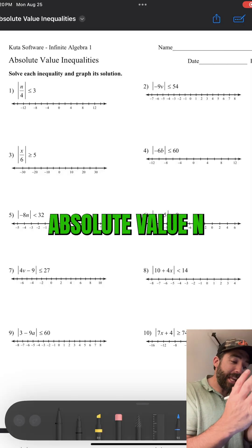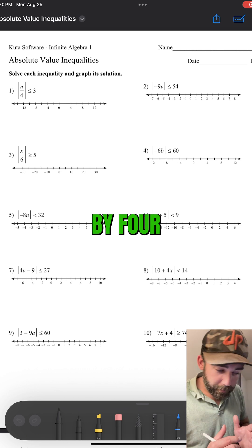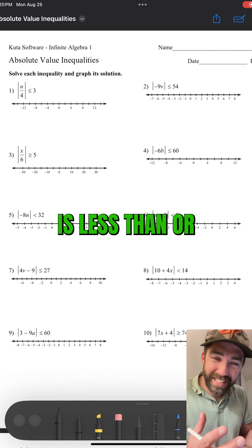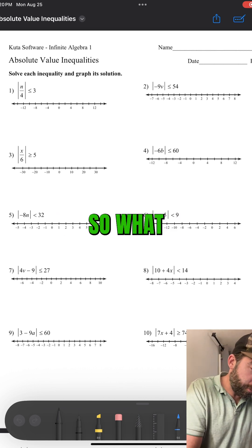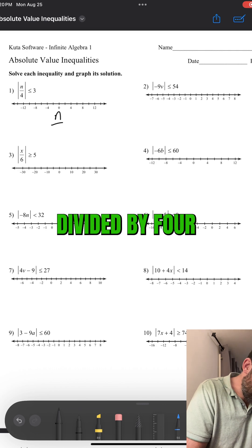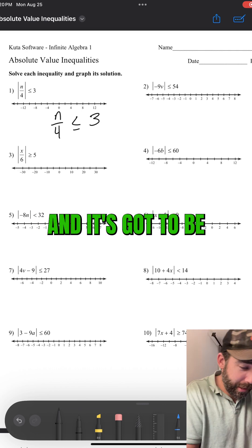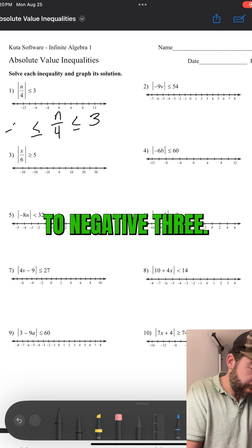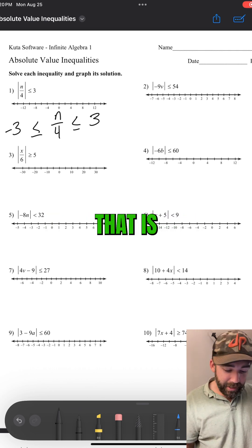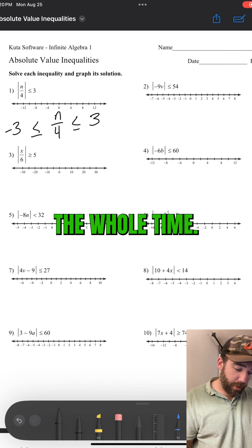Here it is. Absolute value of n divided by four is less than or equal to three. So what that means is n divided by four less than or equal to three and it's got to be greater than or equal to negative three. That is what this thing is saying the whole time.